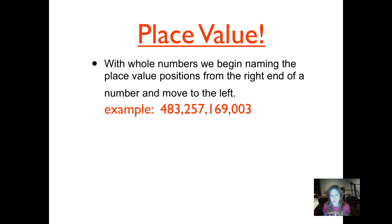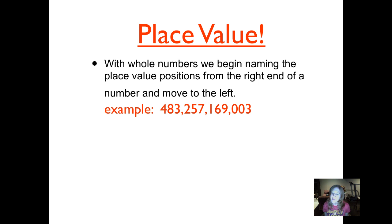With whole numbers, we begin naming the place value positions from the right end of a number and move to the left. Look at this huge number — we could sing the place value position song to figure out how many place value positions there are. Start with the 3 on the right-hand side and sing: ones, tens, hundreds, thousands, ten thousands, hundred thousands, millions, ten millions, hundred millions, billions, ten billions, hundred billions — that is place value. That song is longer than we'll probably ever need for most numbers since we'll usually go to the millions.